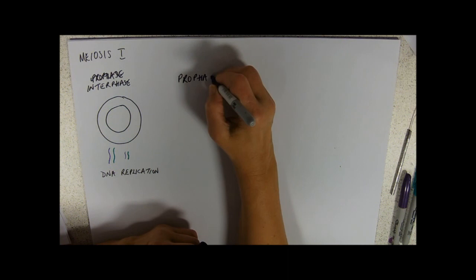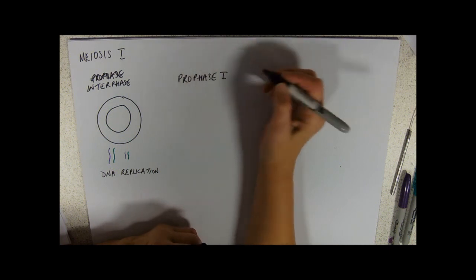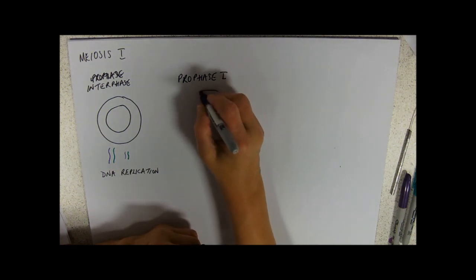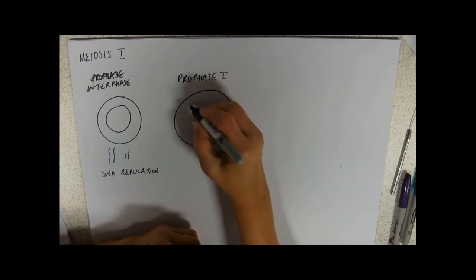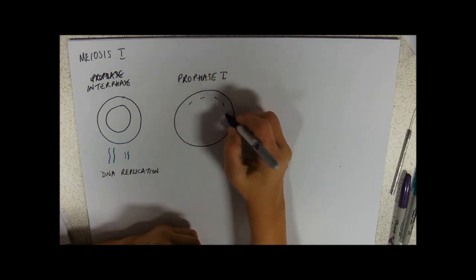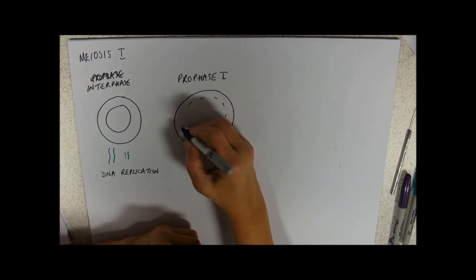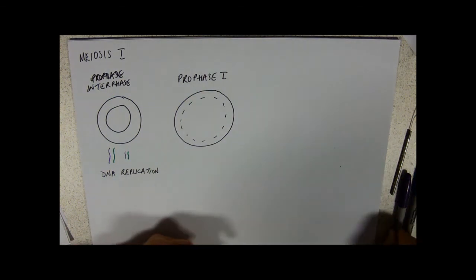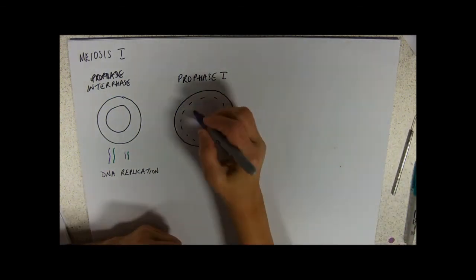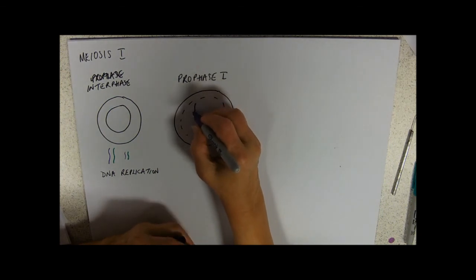So, at prophase I, when our chromosomes appear, they appear as those double structures, just the same. Two sister chromosomes joined by a centromere, our nuclear membrane is going to be disappearing. But the difference is, and this is the key difference, one of our key events.